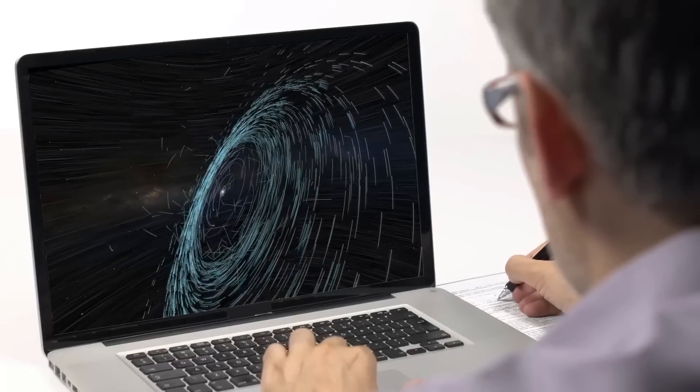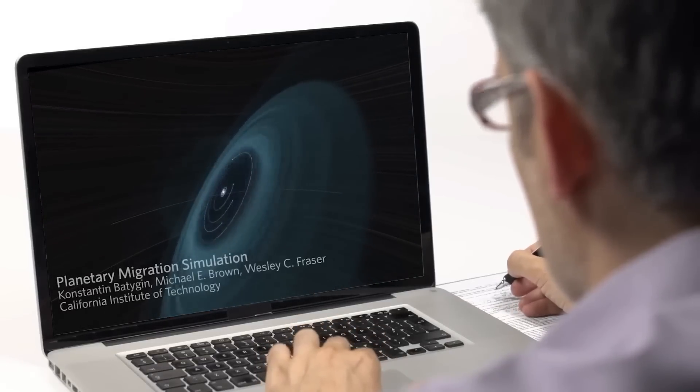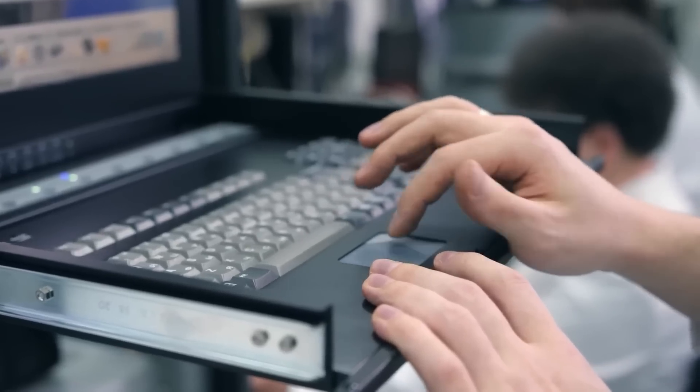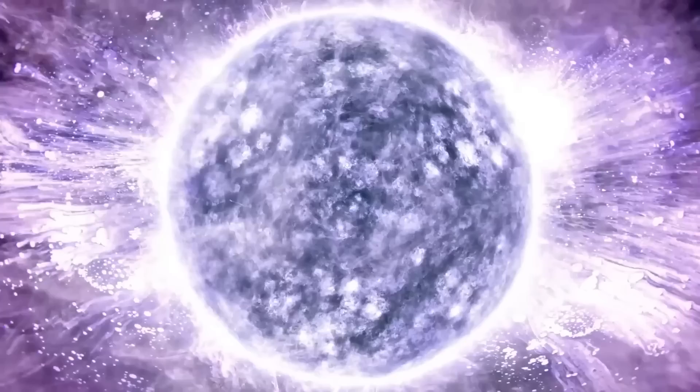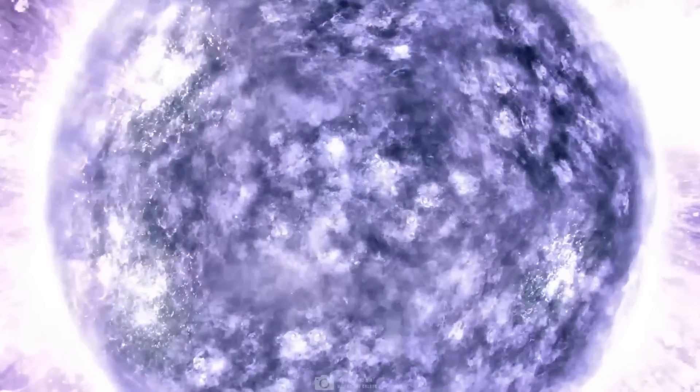To unravel the secrets of Betelgeuse, Seo used computer simulations to track the star's evolution from birth to old age. By analyzing the pulsations at each stage, he found that all four observed pulsations can be explained by a breathing star in the late stages of carbon burning. Fascinating, right?